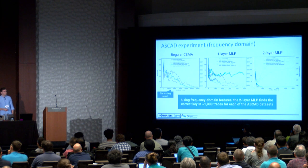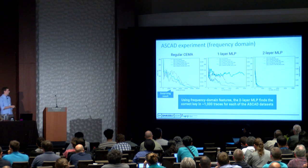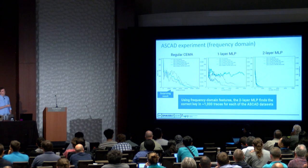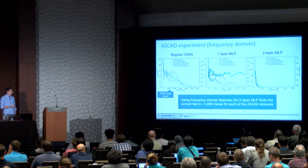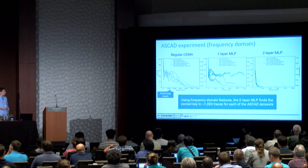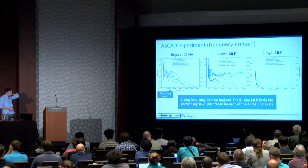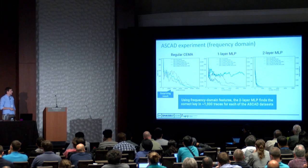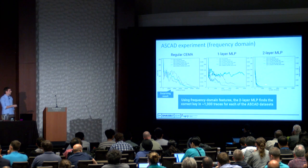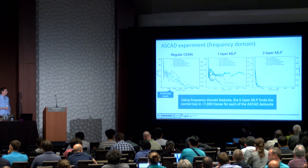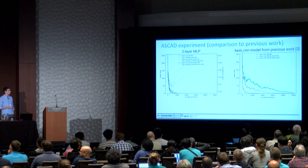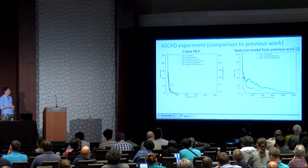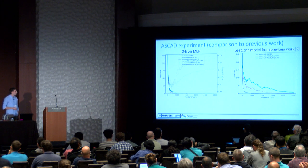Applying our methodology to remove alignment requirements by transforming to the frequency domain, even the baseline CMA in the frequency domain appears to converge to zero for all datasets after about 60,000 traces. With the one-layer MLP in the frequency domain, the correct key is found after 5,000 traces. Adding a second layer, allowing it to learn more complex features, all three datasets—including desync-50 and desync-100—find the correct key in about 1,000 traces. This compares favorably to the best CNN from the original ASCAD authors, especially for the desync-50 and desync-100 datasets, which the original deep CNN could not handle—thanks to our FFT-based approach.